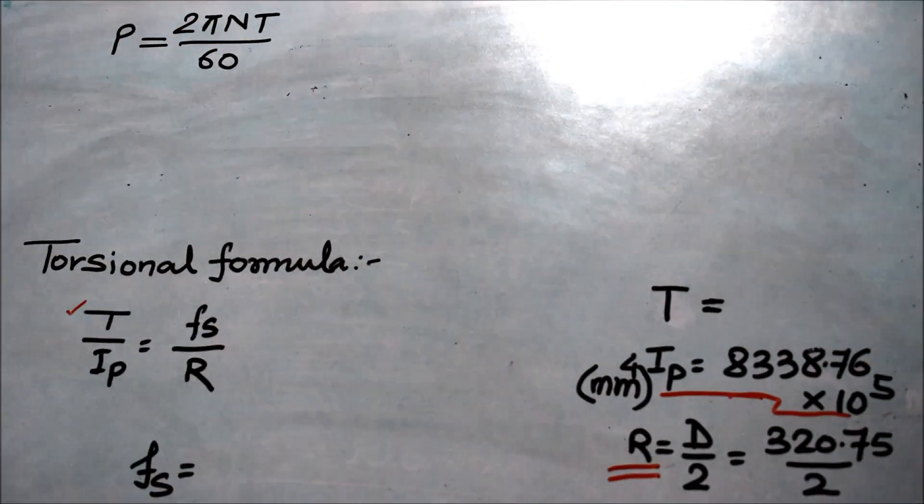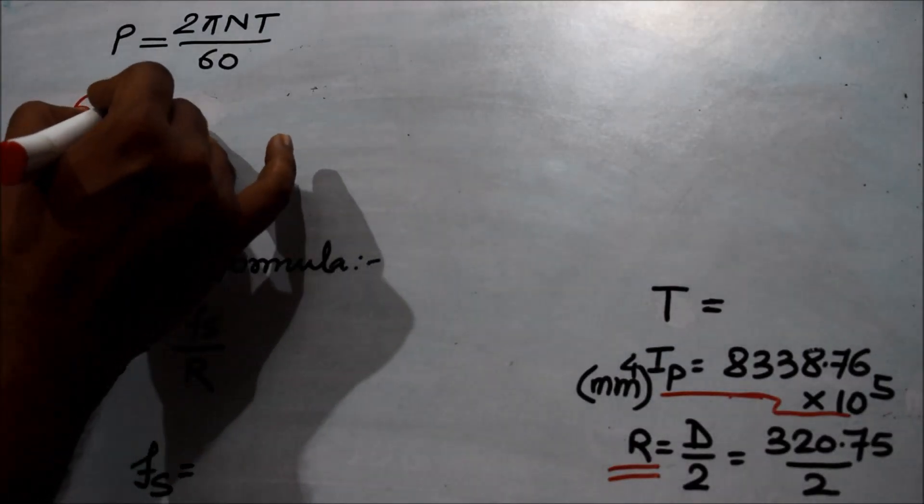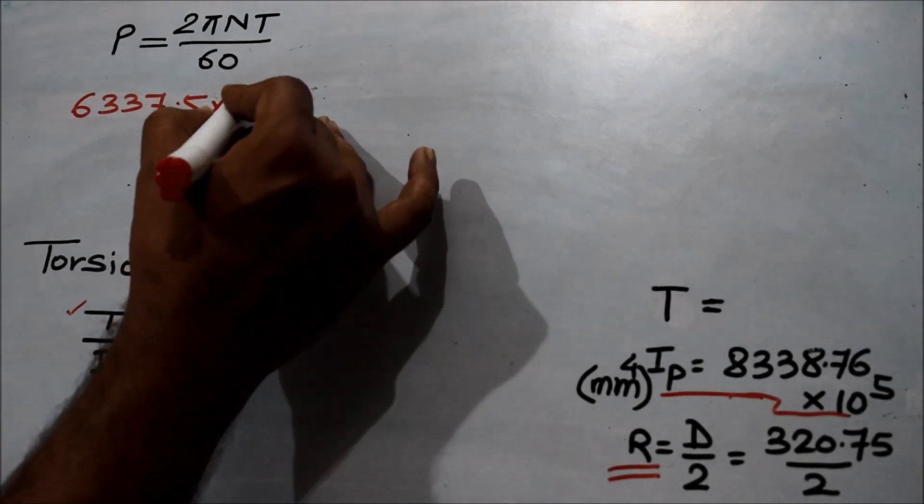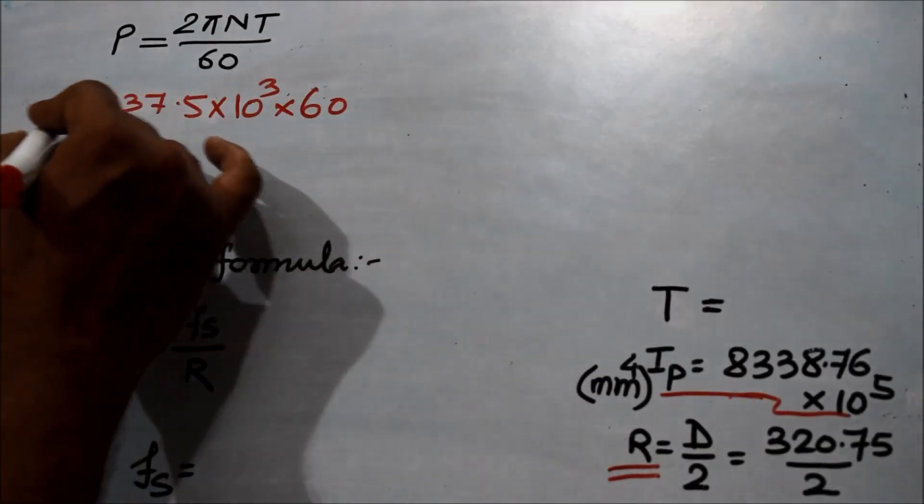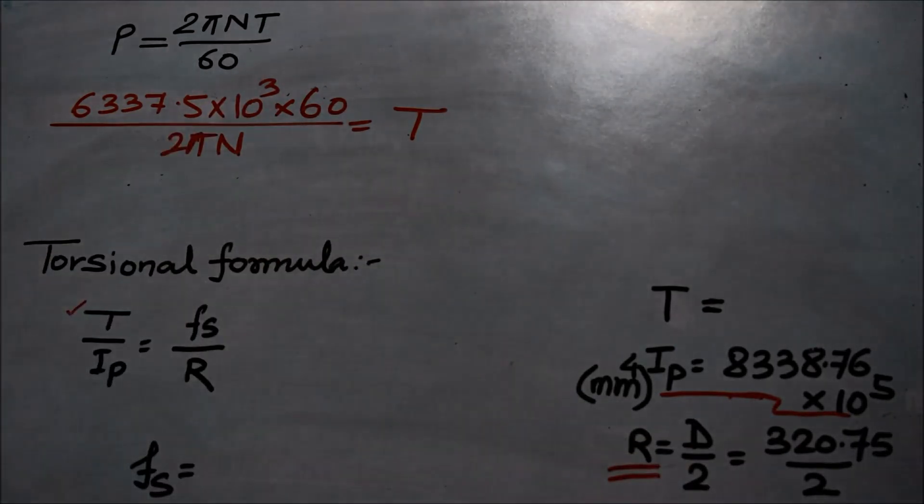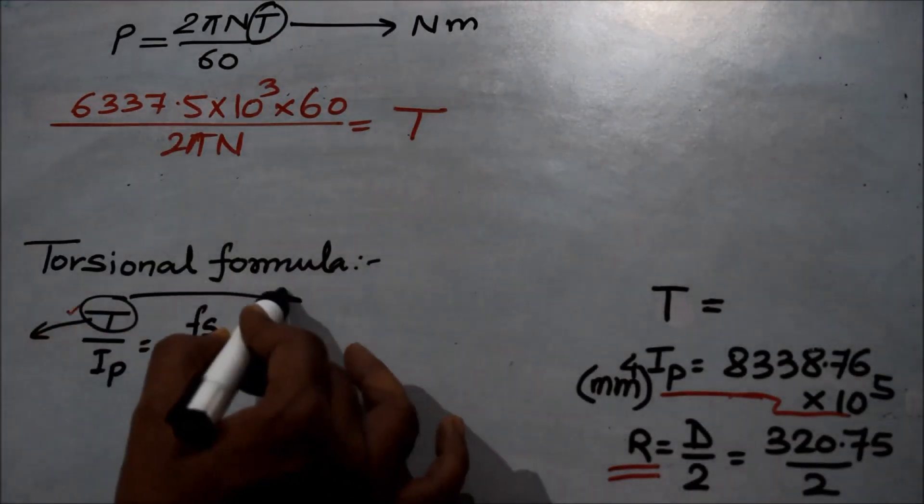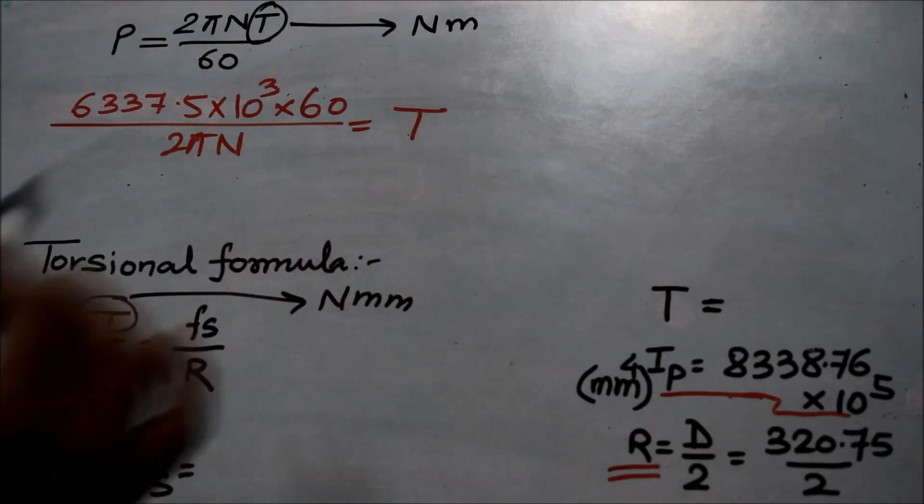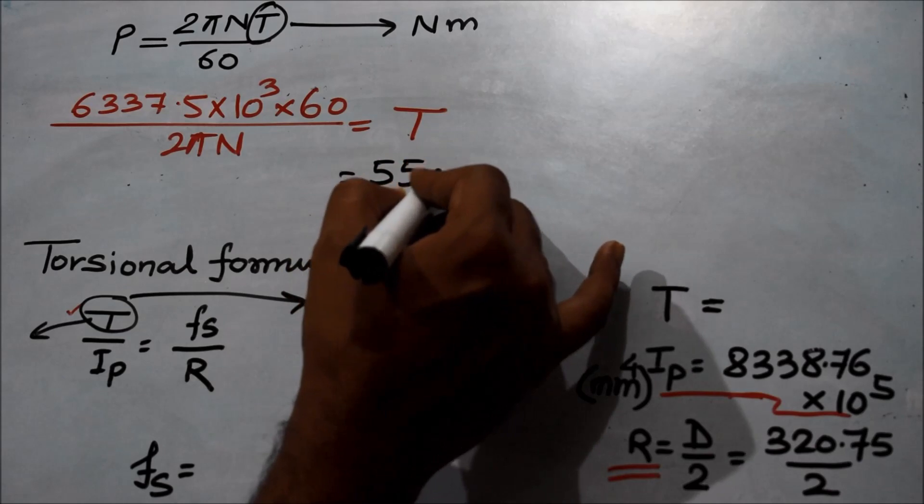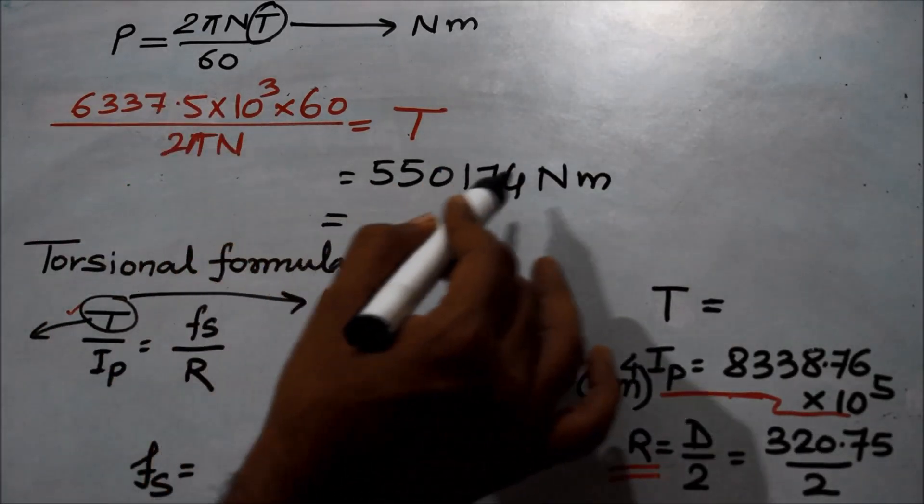In order to find the value of T, we will use this famous formula: P equals 2 pi N T upon 60. We know the shaft power as provided in the question: 6337.5 kilowatts, so I am multiplying it with 10 raised to 3, then multiply with 60 and divide by 2 pi N. The T that you will get has SI unit Newton meter, and the T in the torsional formula has SI unit Newton mm. The value of T that I have calculated is 550,174 Newton meter.